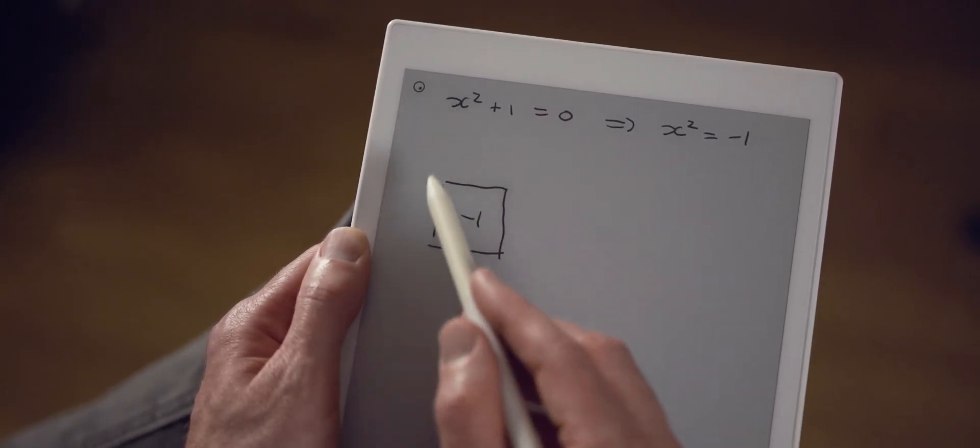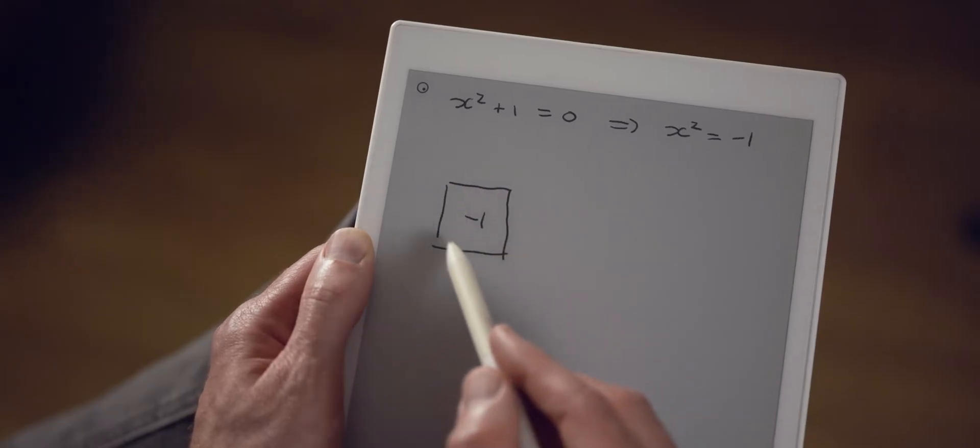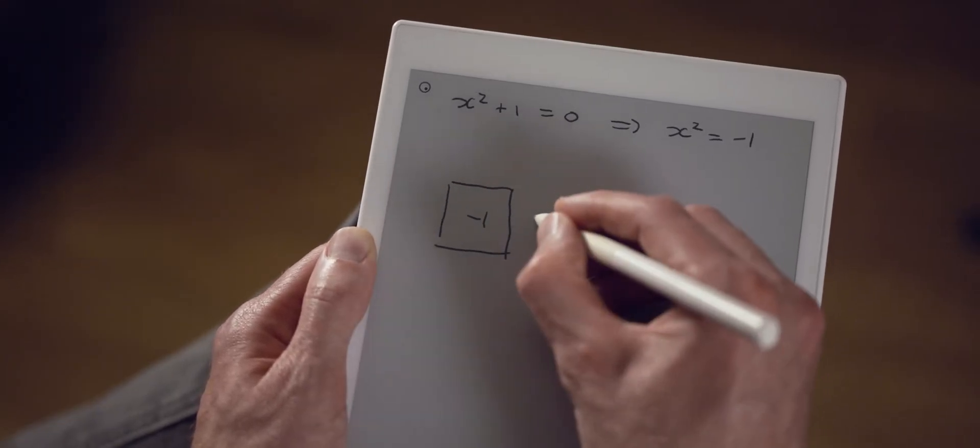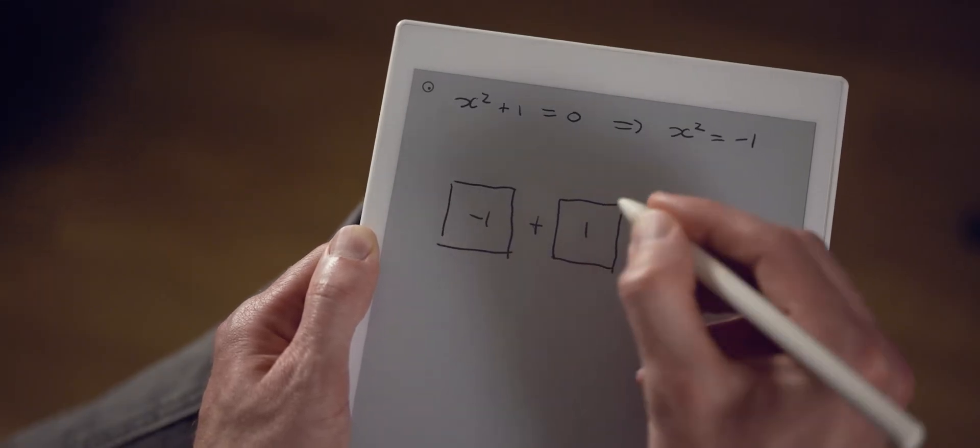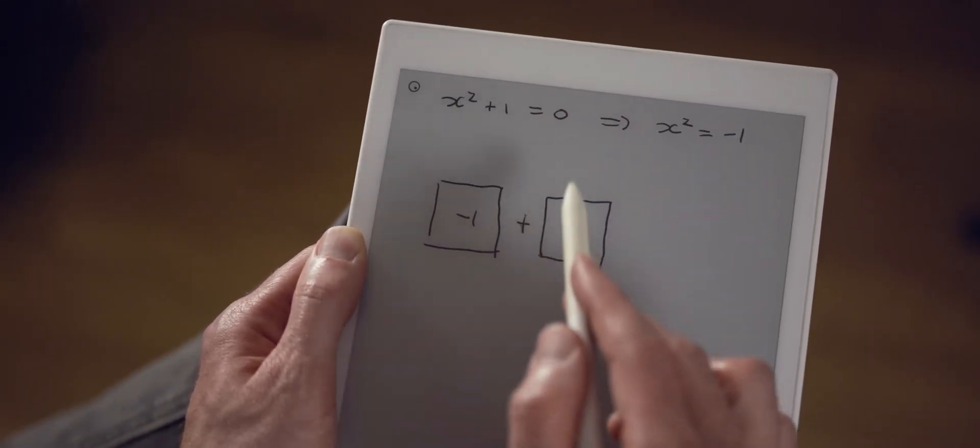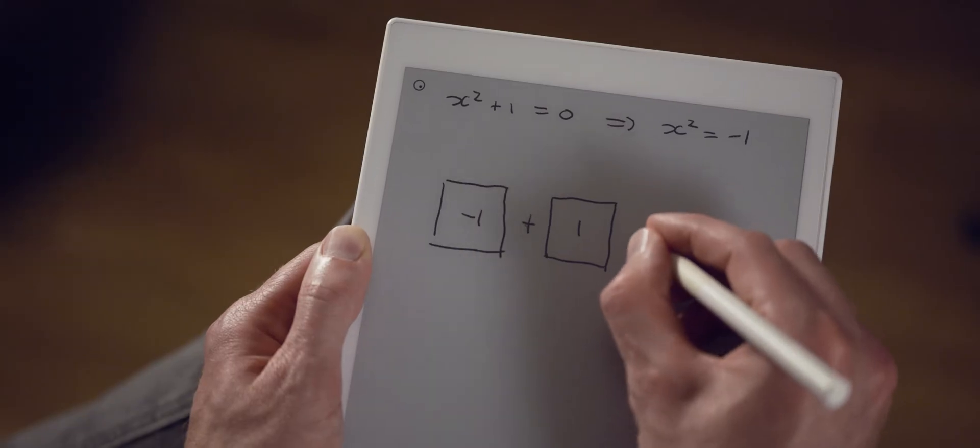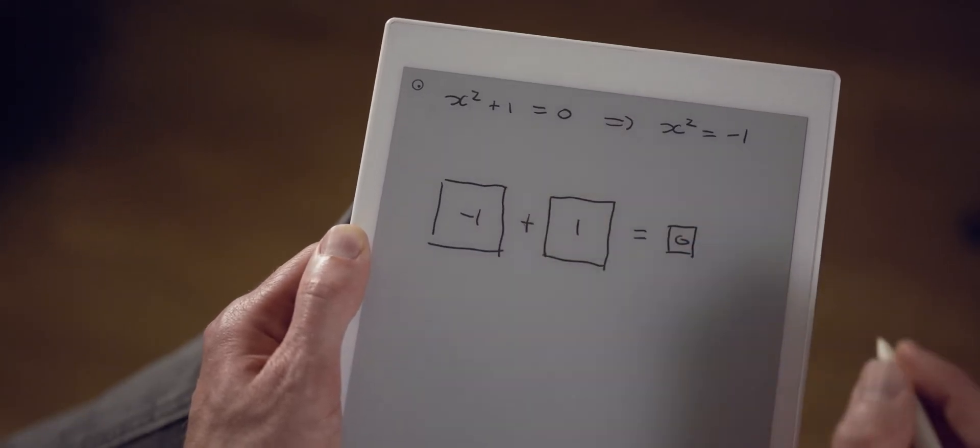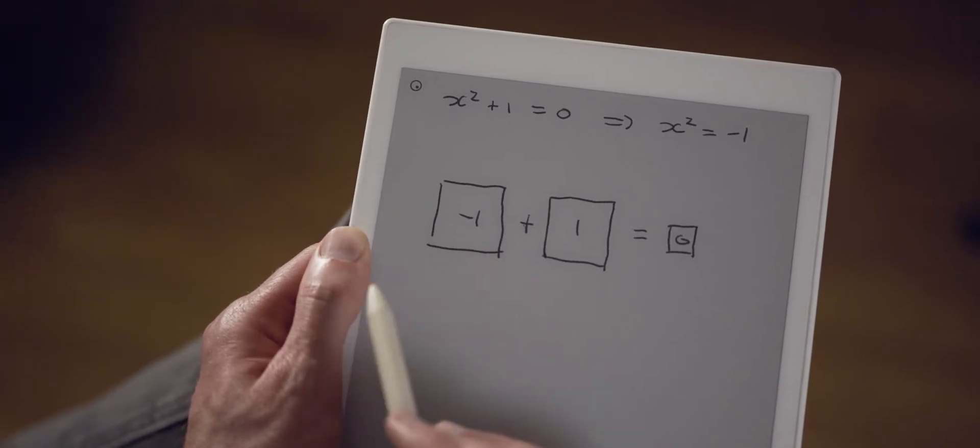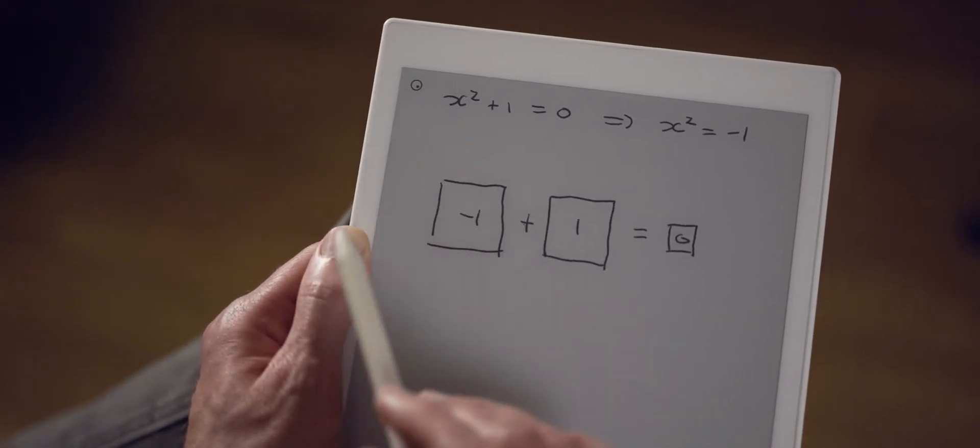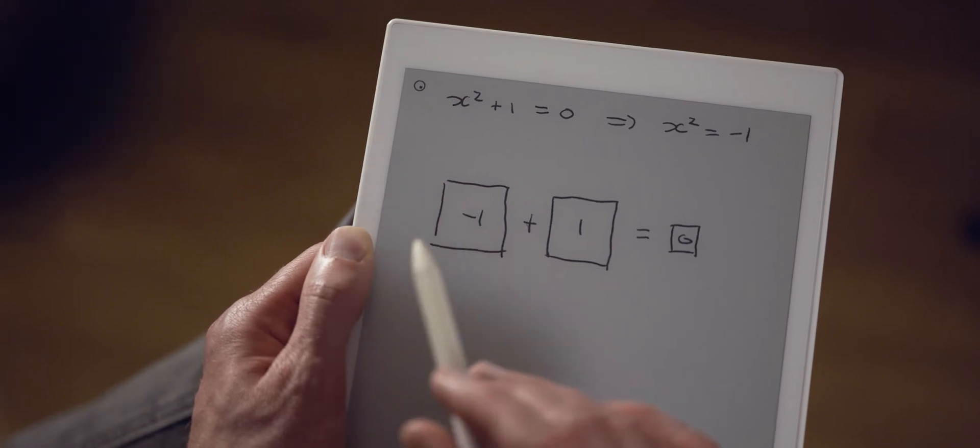For example, the term x squared I will represent with a square which should have an area of minus one. The term plus one I will represent with a square with an area of plus one. The zero will be represented by a square with area zero. This is the way the ancient Greeks would have done it, because to them quadratic equations were about areas.